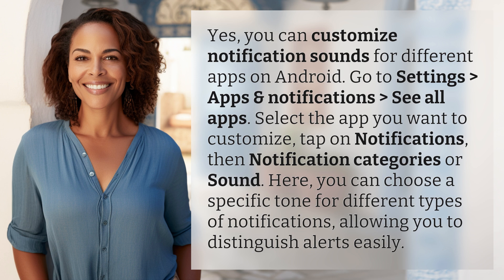Then tap Notification Categories or Sound. Here, you can choose a specific tone for different types of notifications, allowing you to distinguish alerts easily.